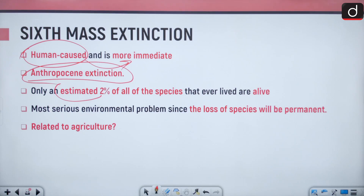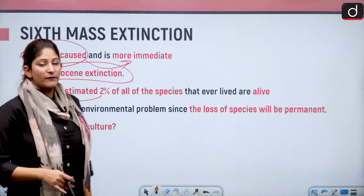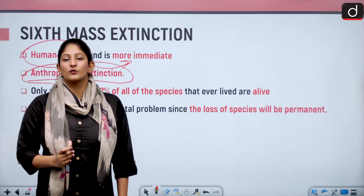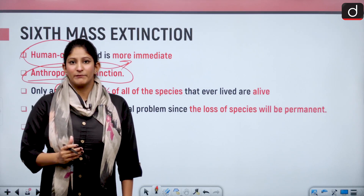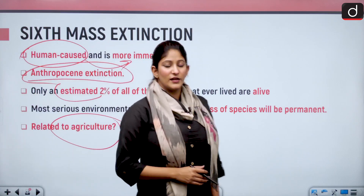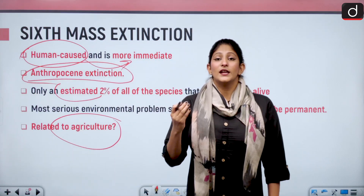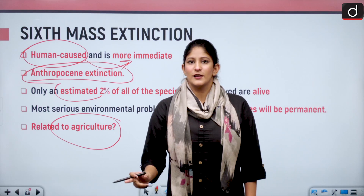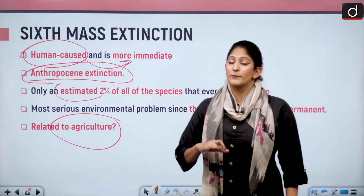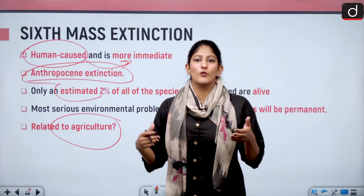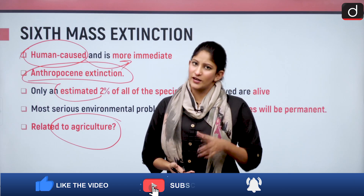This is the most serious environmental problem since the loss of species will be permanent. Since the development of agriculture 11,000 years ago, its impact has been accelerated. Because of the population increase from approximately 1 million to 7.7 billion, more human beings need more space for residential and agricultural areas.